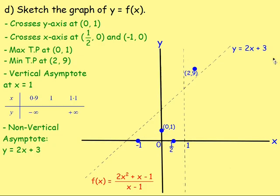Now summarising all the information to sketch the graph. Plot the y-axis crossing at (0, 1), the x-axis crossings at (1/2, 0) and (−1, 0), and the turning points at (0, 1) maximum and (2, 9) minimum. Draw a dotted vertical asymptote at x = 1. Draw the non-vertical asymptote y = 2x + 3, which is a sloping line with y-intercept 3.